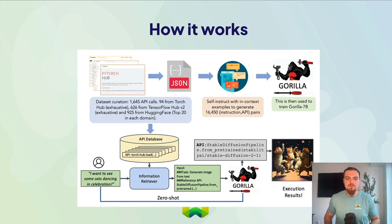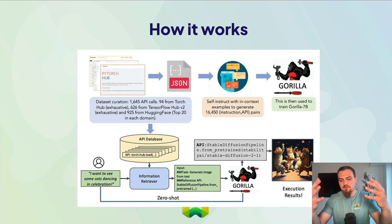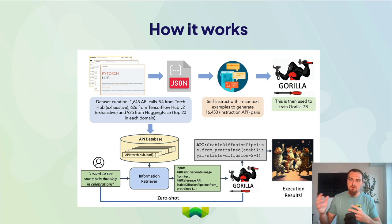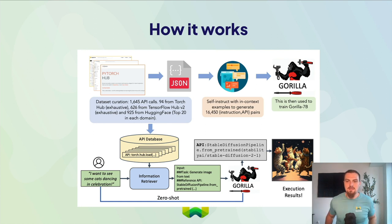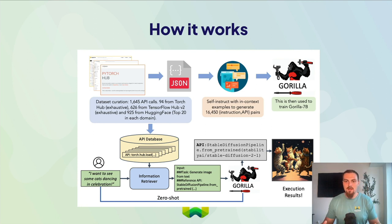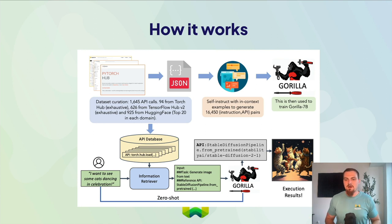The key idea behind how it works: we have examples of APIs, we use self-instruct, where we take an example of an API and prompt GPT-4 to write an example of an instruction that would want to use this API. That becomes the training data to train the Gorilla language models. There's also a really interesting ablation about retrieval-aware training — one of the most exciting ideas on the cutting edge — where you use the retrieved context during training, not just at inference time.